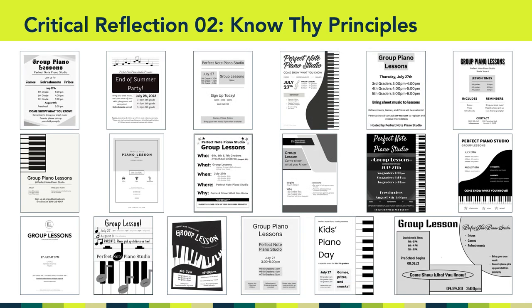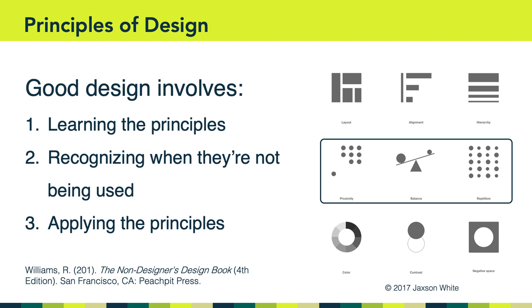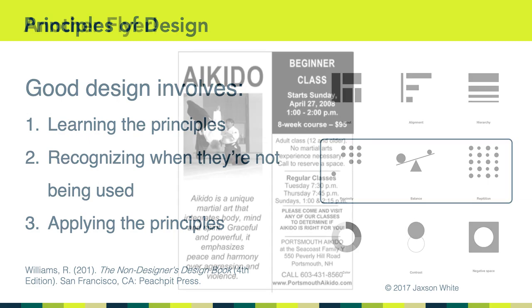Zooming out, I want to encourage all of you to study these different designs. What do you notice about them, and how might you tweak or change them to make them your own if you had the chance? This is an excellent way to develop your critical eye regarding good design and the principles of design that we're learning about. So where are we going this week? As you probably guessed, we're going to learn about the next three principles on our list: proximity, balance, and repetition. And we'll do this by redesigning another non-example. Have a great week, and I'll see you in Canvas.